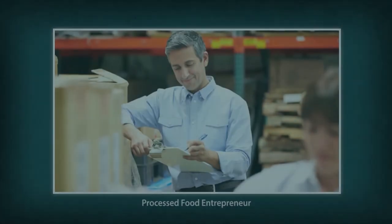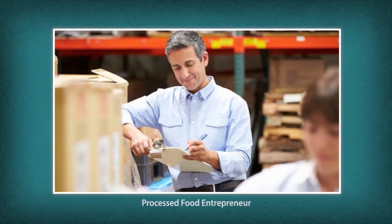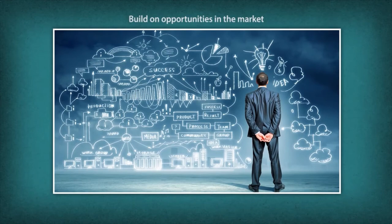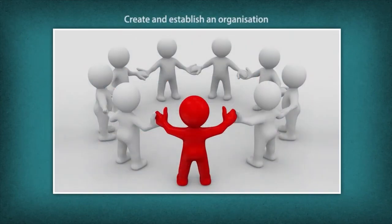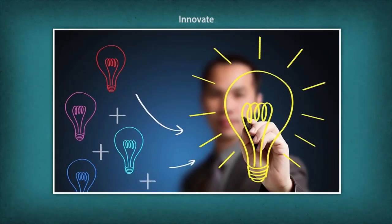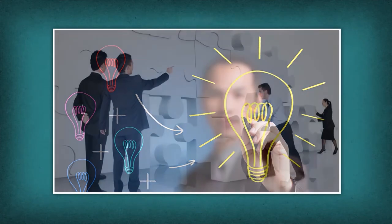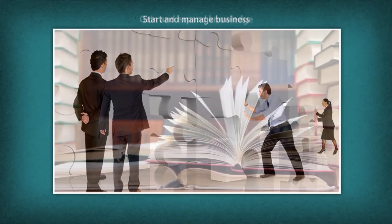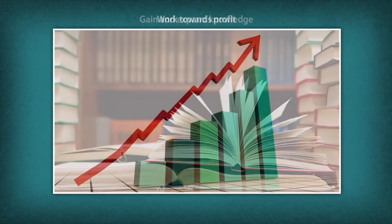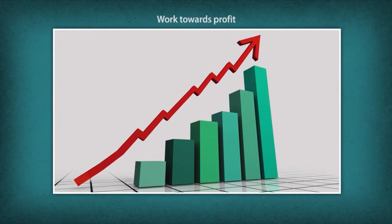The roles and responsibilities of a processed food entrepreneur include: exploring the market to identify opportunities and building on them, creating and establishing a food processing organization, innovating and giving a different dimension to a product or process, starting and managing a business, gaining and expanding knowledge on food processing technology and food laws and regulations, and working towards making a profit by marketing and selling the products.